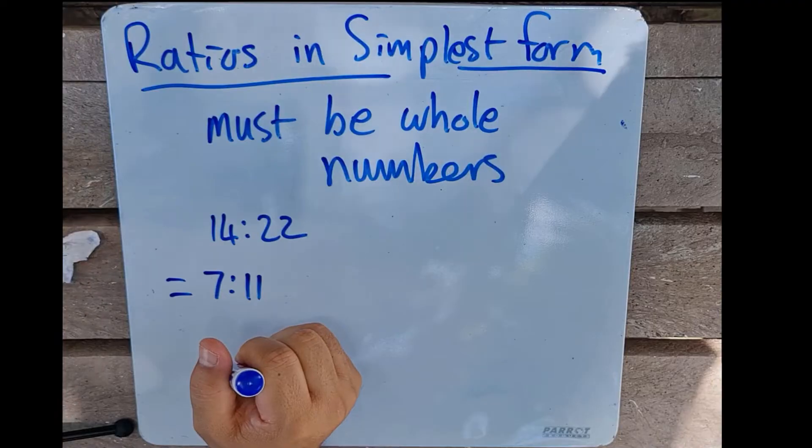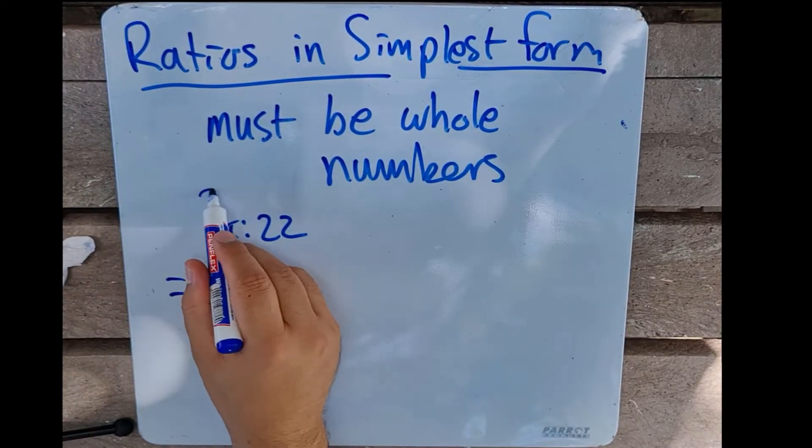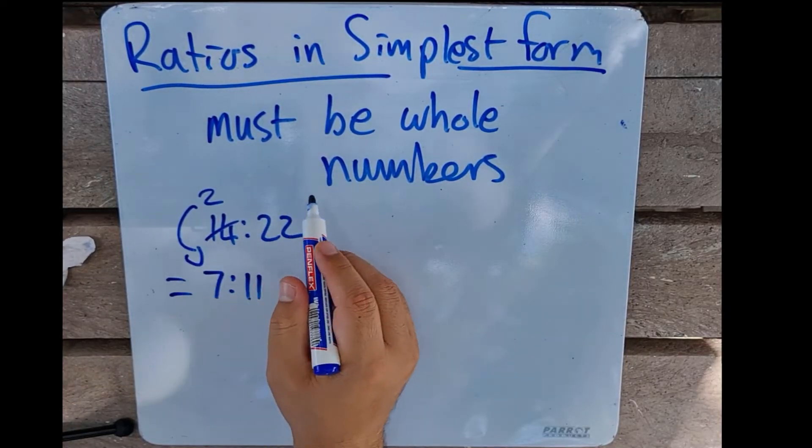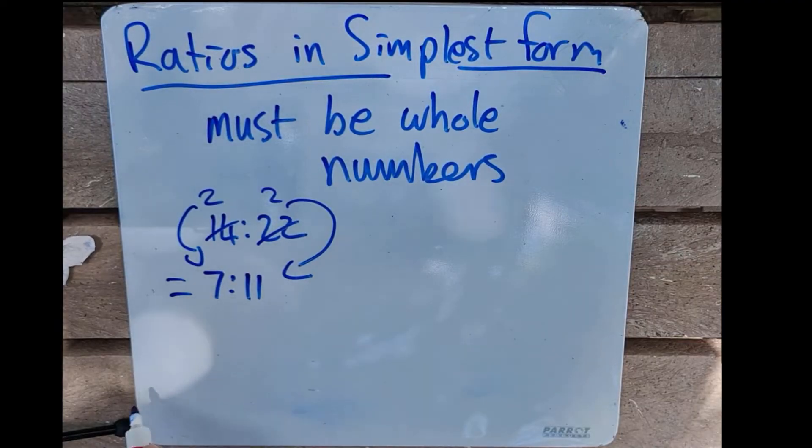Why? Because I can divide this by 2, that will give me 7. I can divide 2 into 22 and that will give me 11.